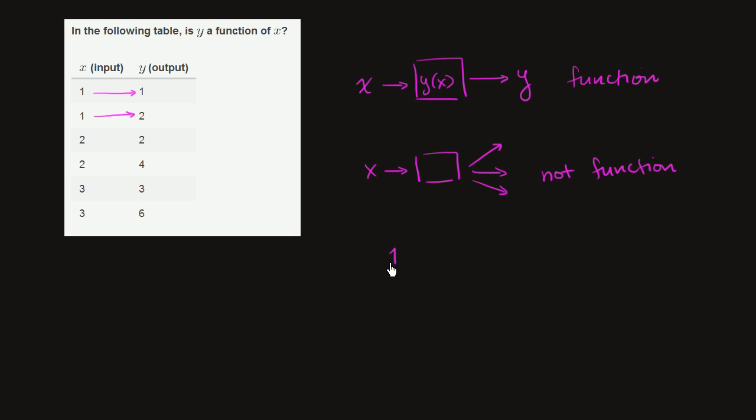So here we have a situation where we input 1 into our little relationship box, and when we input 1 to our relationship box, we could get a 1 or we could get a 2 for y. So this is definitely not a function.